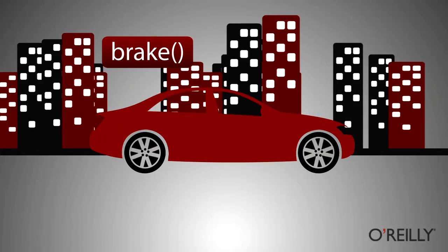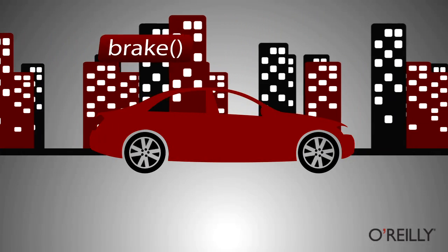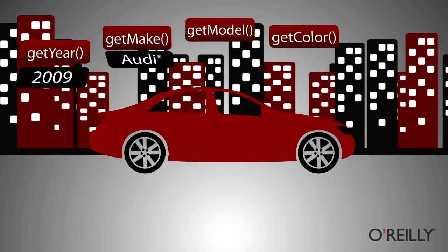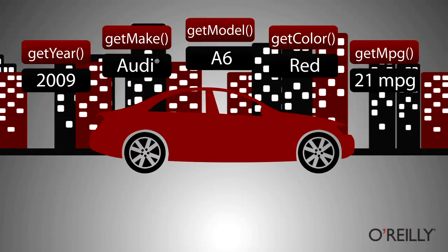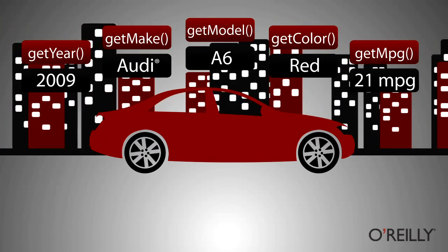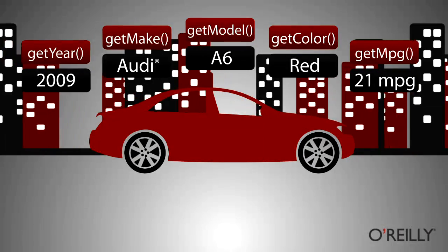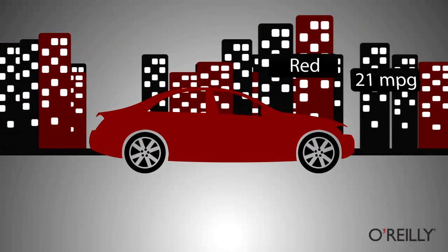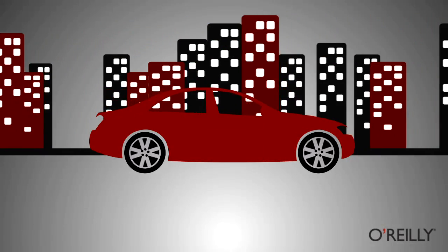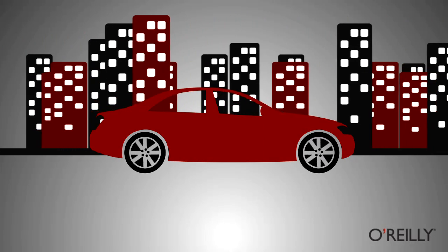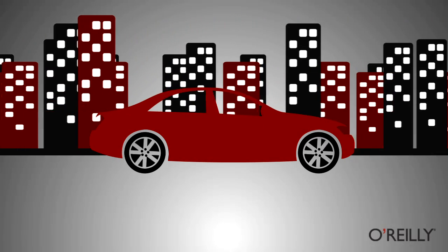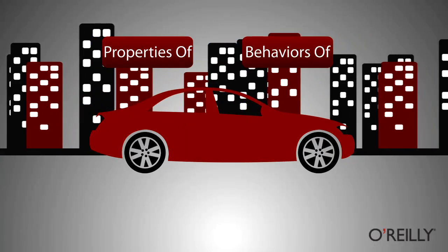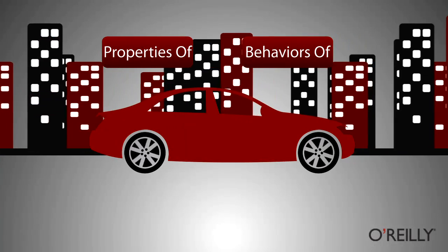We can also ask our car about itself. We can say: what kind of car are you? What is your make? What is your model? What is your year? And the car can tell us those things about itself. That is the essence of what an object is — simply a collection of properties that describe that object and behavior that allows that object to do things.